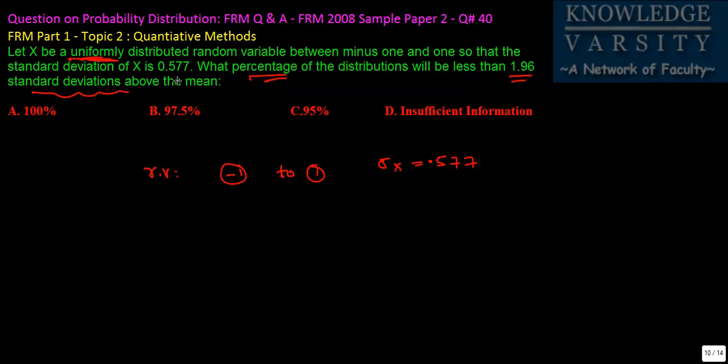It is a random variable given between minus one and one, uniformly distributed. So what we can do is we can draw this diagram. This is minus one and this is plus one. Since the distribution is uniformly distributed, any value can be there. Let's say x is the value from minus one to one. What would be the mean? The mean would be exactly the middle point, which would be zero.